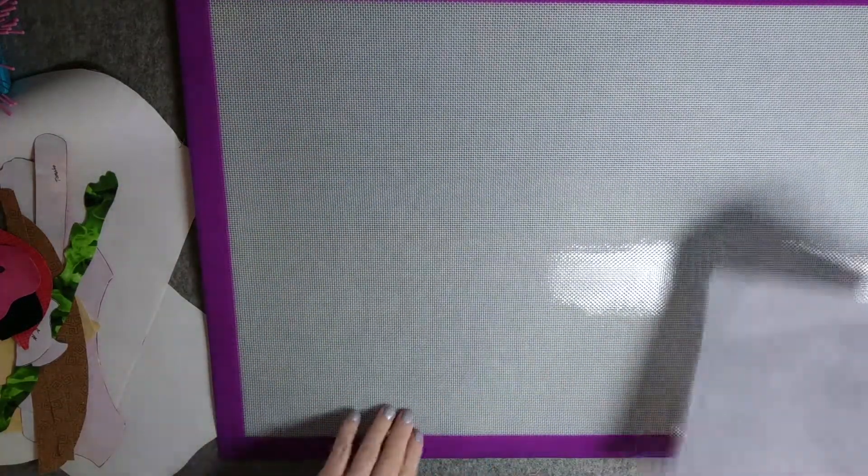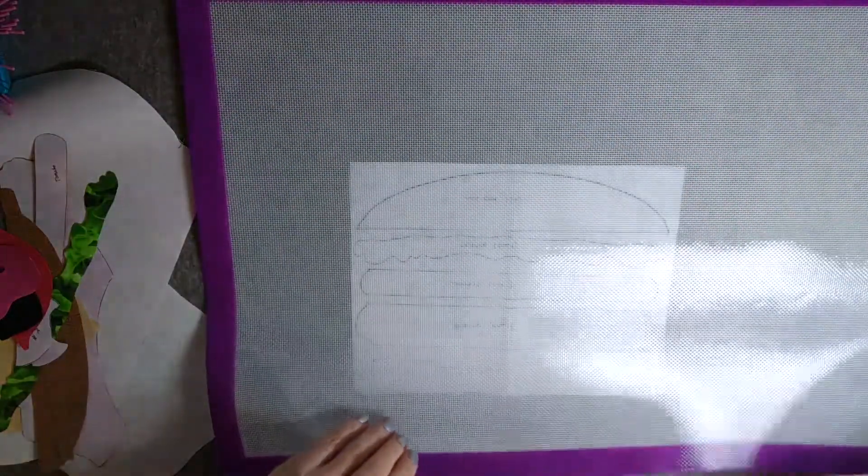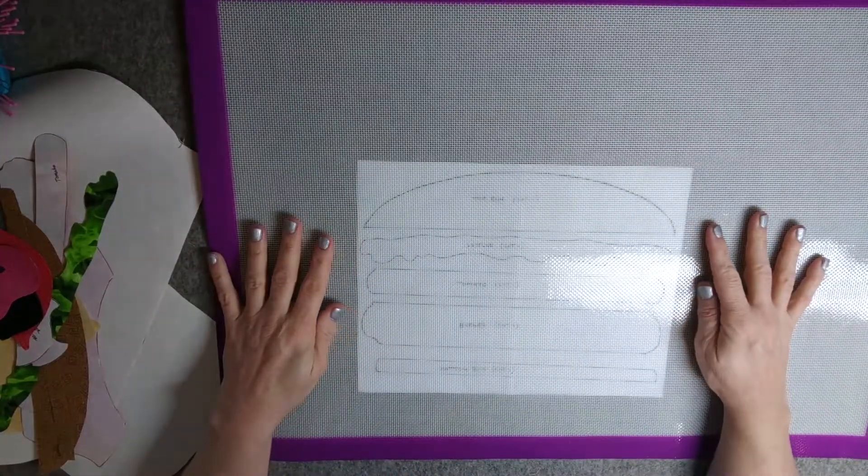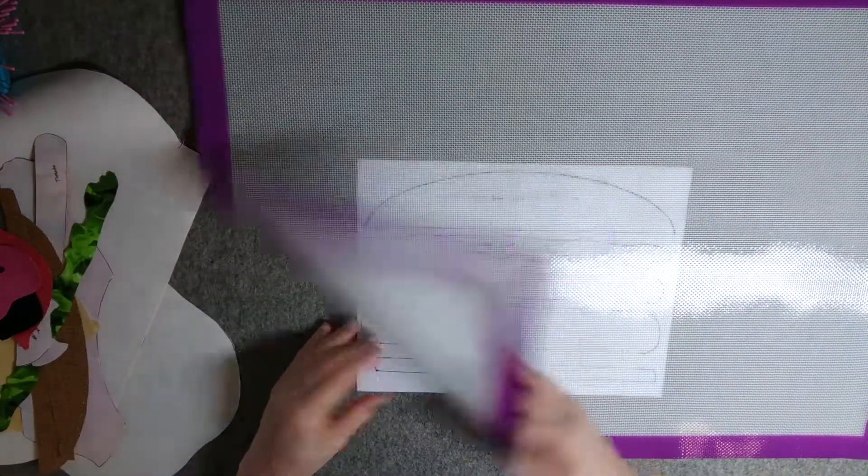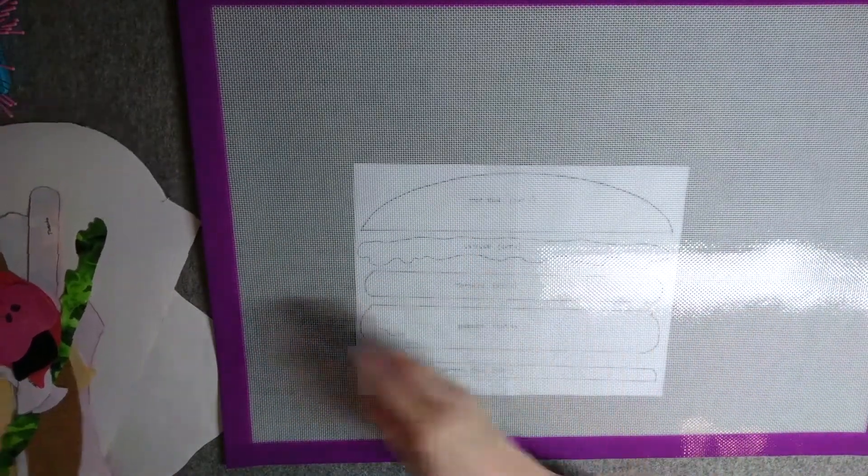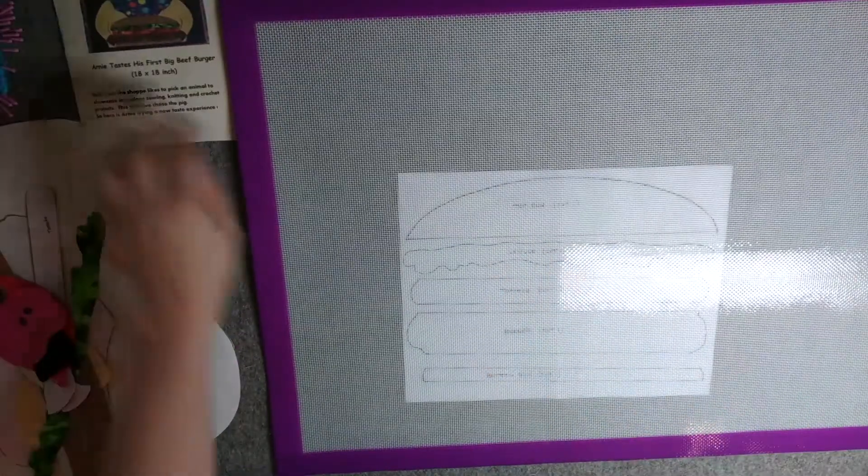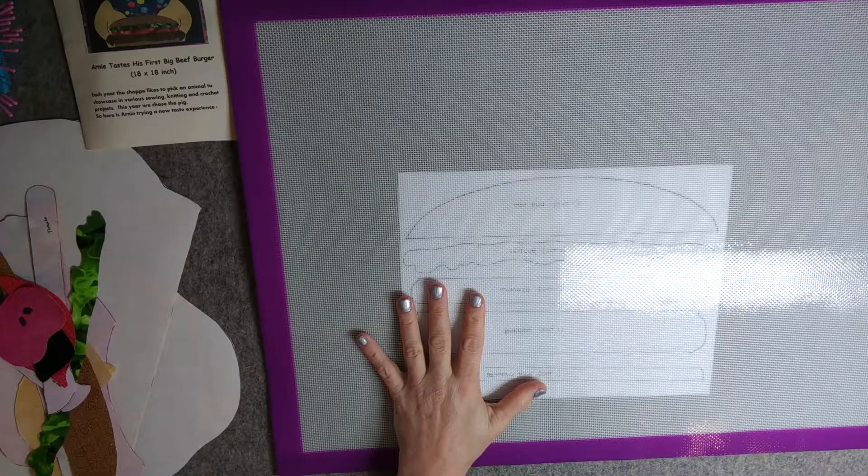Look at that, you can see right through it. That's pretty cool. Let's assemble something on it and iron. I've got my iron set to cotton, which is the highest setting.